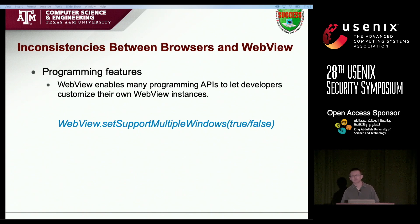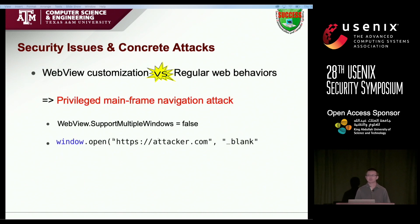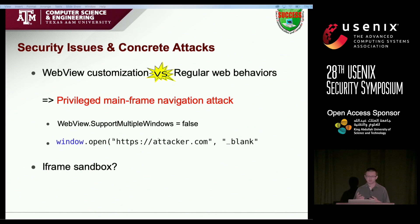The second type is about programming features. WebView provides many programming APIs that allow developers to customize their own WebView instances. But we found there is a strong conflict between WebView customization and regular web browsers. Attackers can leverage this conflict to perform a navigation attack — directly navigating the main frame. The difference between this attack and the previous navigation attack is that this attack is totally privileged. All existing defense solutions, including iFrame sandbox, are unable to prevent this kind of attack.